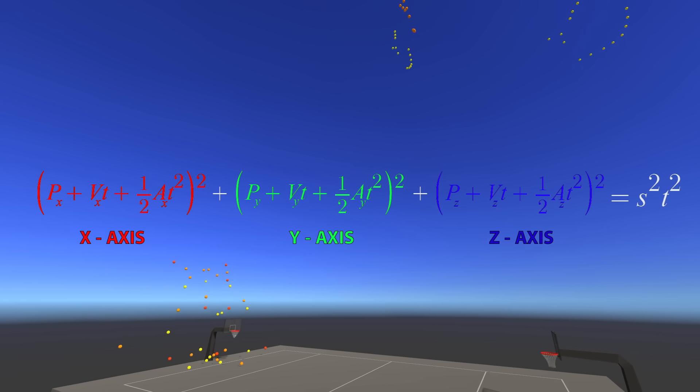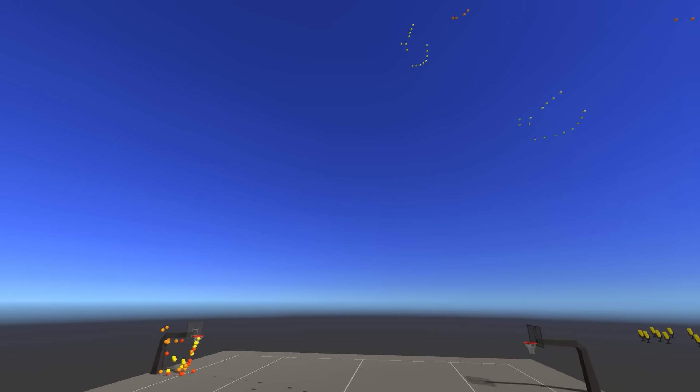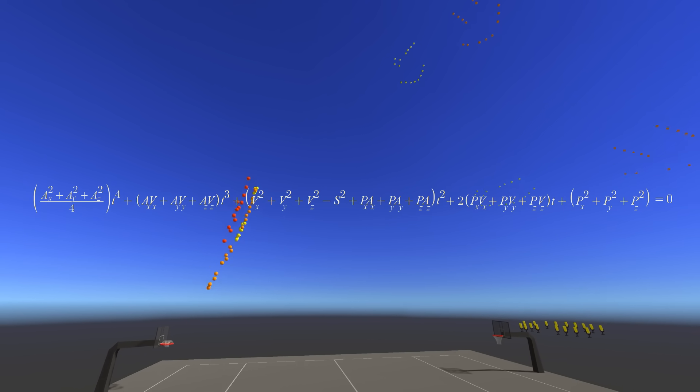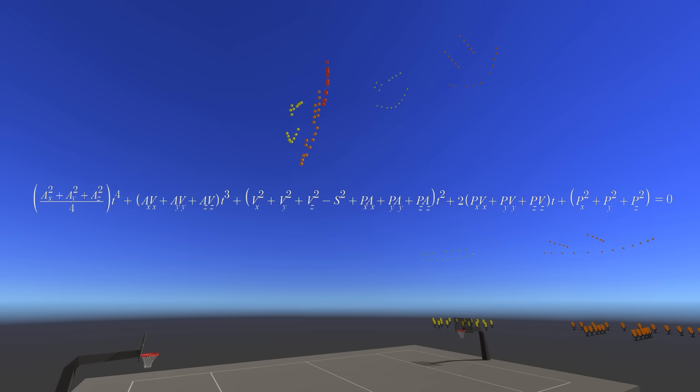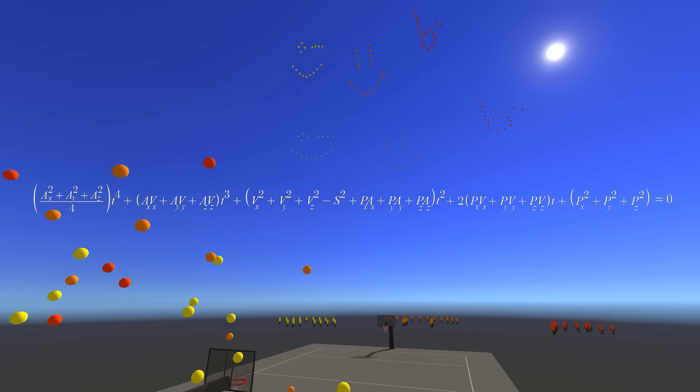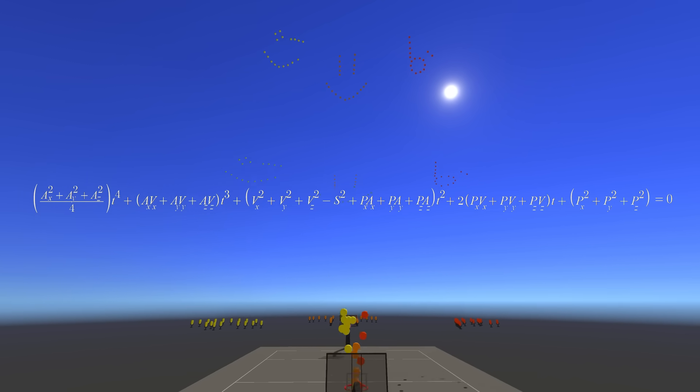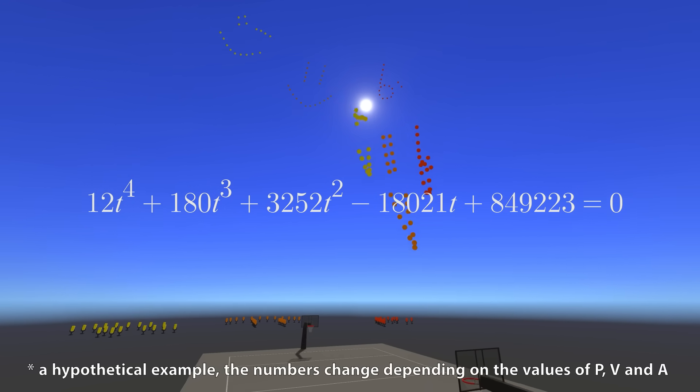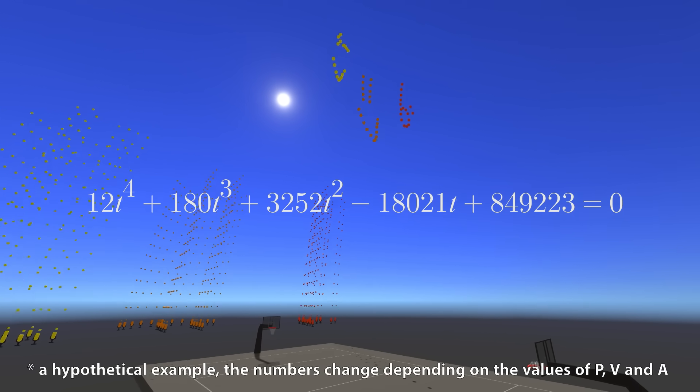Since position, velocity, and acceleration are vectors, we need to rearrange the equation a bit to account for the three axes. Finally, we can expand this entire thing out to yield this. This is horrible to look at, but it's actually not that bad. We know every variable here besides t, so we can simply let the computer calculate the other numbers for us, and once we have it in this form, we can simply solve for time and learn all the angles we can shoot at.